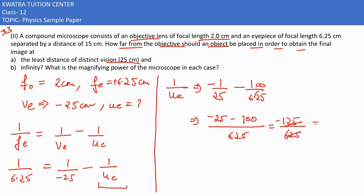Canceling, we get minus 1 by 5, so uₑ = -5 cm. Therefore, the image formed by the objective is formed at a distance of 10 cm toward the eyepiece.